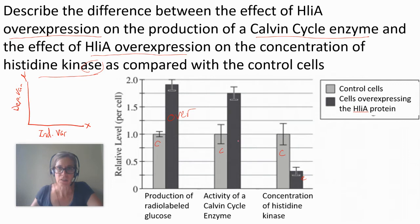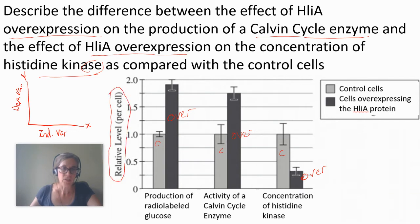The darker bars are the overexpressed cells — the cells that overexpress this protein. Here, where the dependent variable should be, we have 'relative level per cell.' We're looking at controls versus overexpressed cells, and this shows the production of radiolabeled glucose. This actually doesn't look like an independent variable to me — we're just comparing control versus overexpressed cells and the relative levels in each.